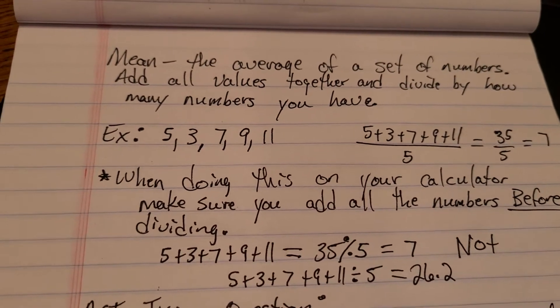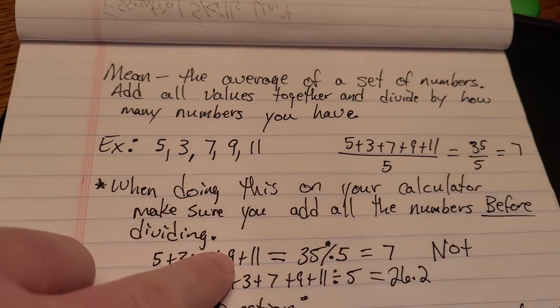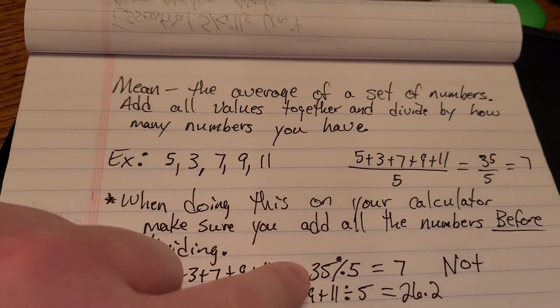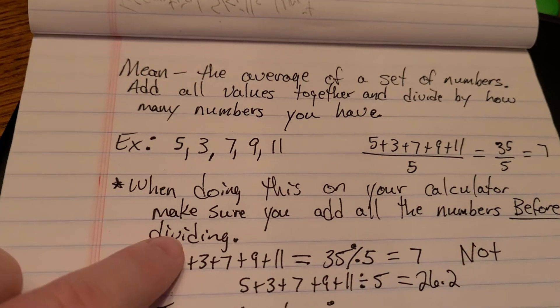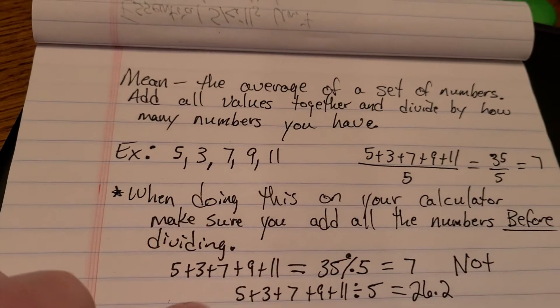So what that means is like add them 5 plus 3 plus 7 plus 9 plus 11 and then hit equals and that'll give you 35 and then you divide by 5 so that you can get 7. Or you can group these with parentheses.